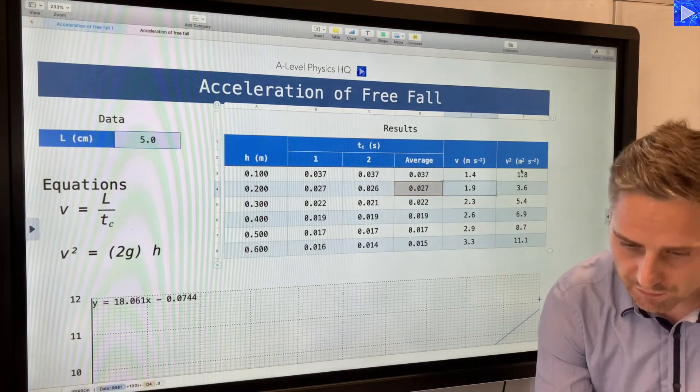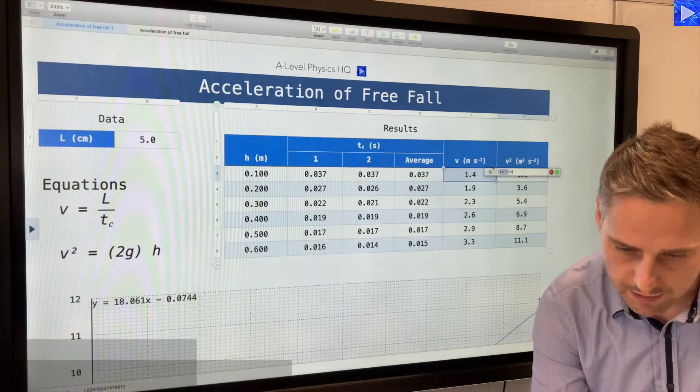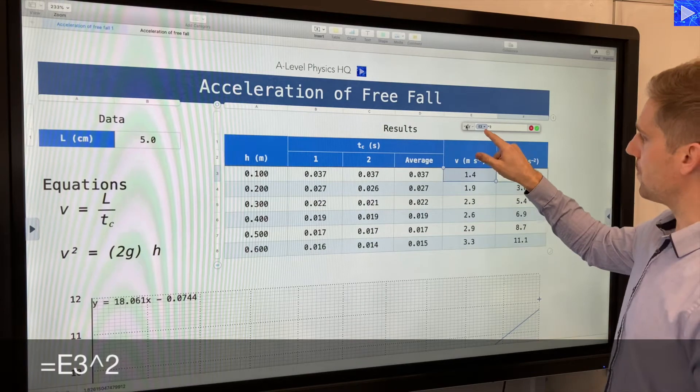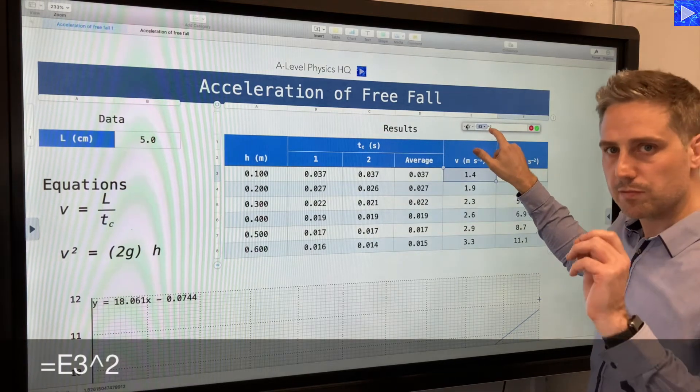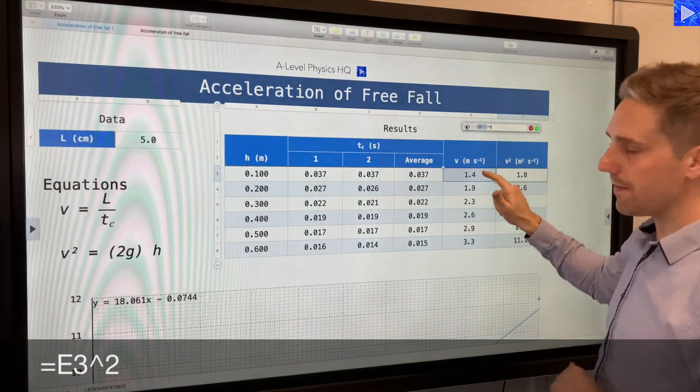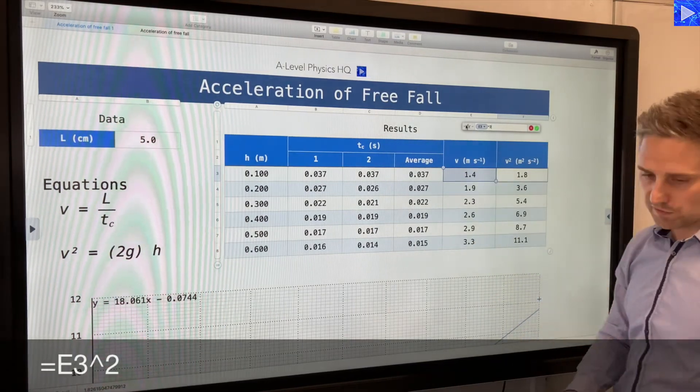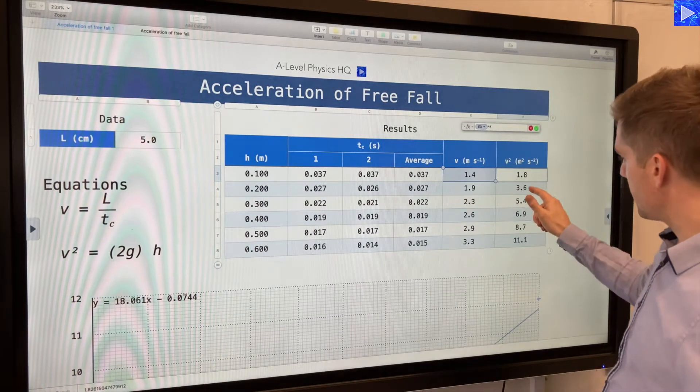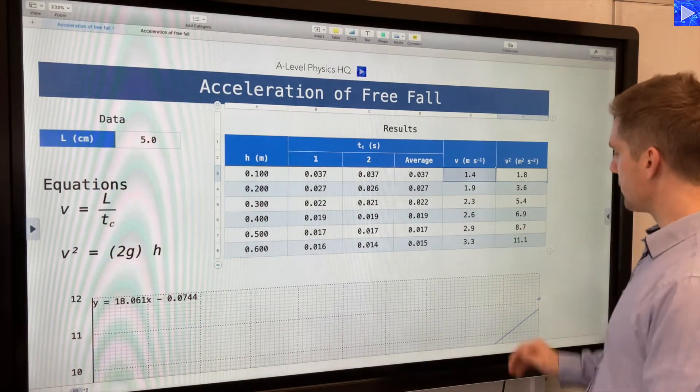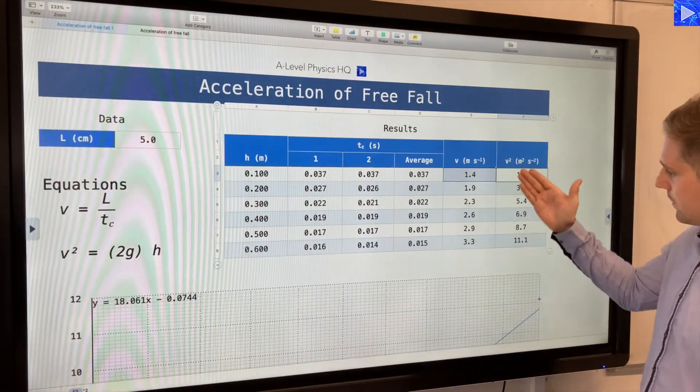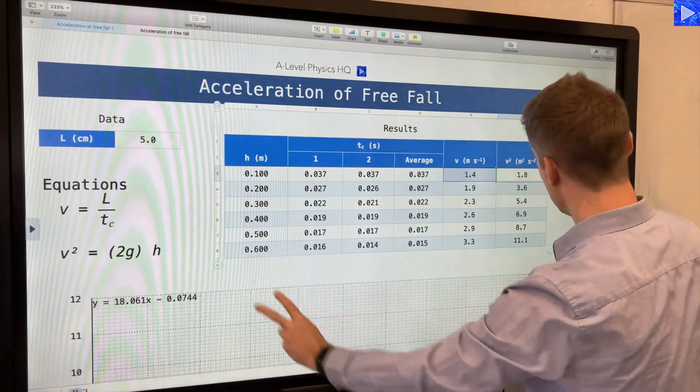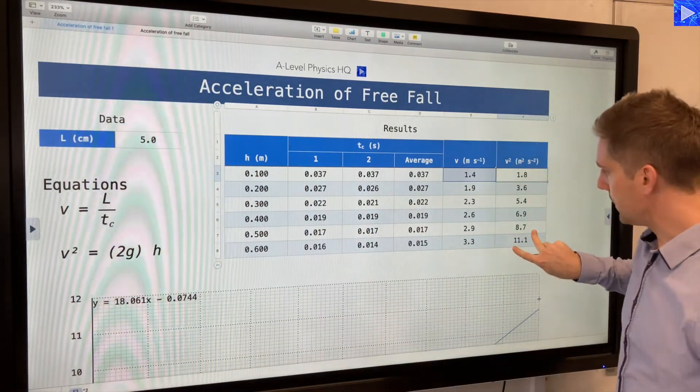Then over here, I'm simply squaring V. So V and then use the caret symbol, which is shift six, put the two in and that will square the value. So 1.4 squared, 1.8, 3.6 and so on. We've got V values, we've got V squared. So independent variable is here on the left and my dependent variable is here on the right.